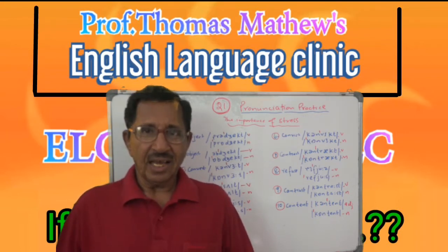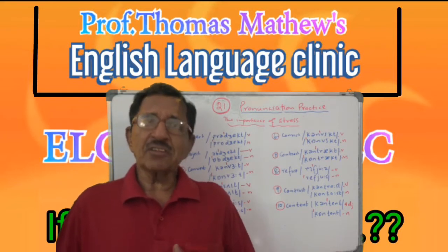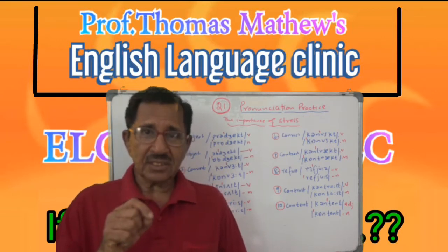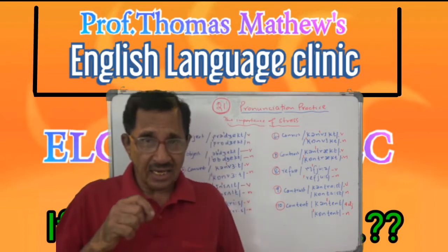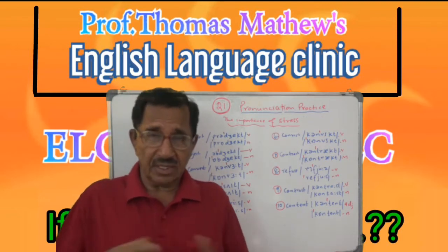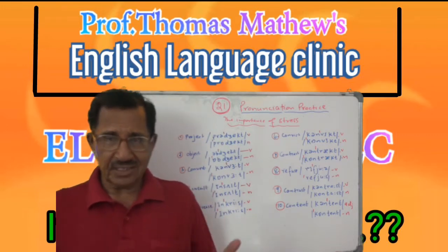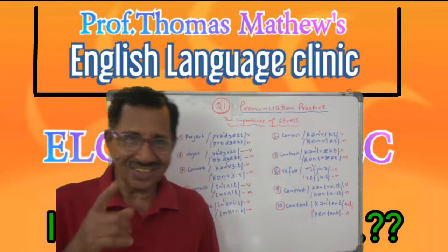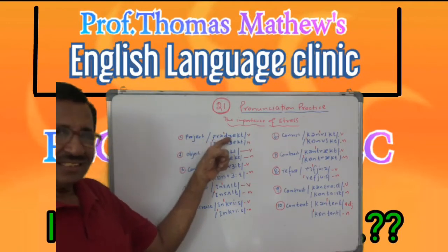Understand that? I have just collected 10 words here — same spelling but different pronunciations. One pronunciation is that of the verb, and the other is that of the noun. Because sometimes an adjective and a noun you will find. So here you are — you will see this. First preference is given to 'project.' When you say 'project,' that is the verb.